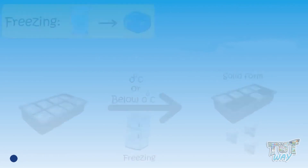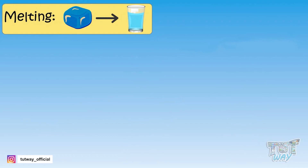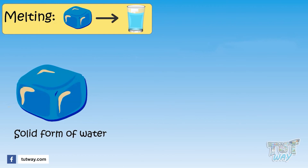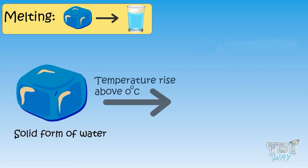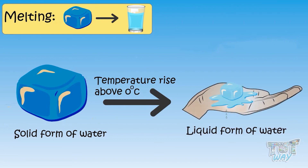Now let's see how the solid form of water changes back to a liquid form. When the solid form of water — that is, snow or ice — gets enough heat that its temperature rises above zero degrees, it changes back to liquid form, and this process is called melting.